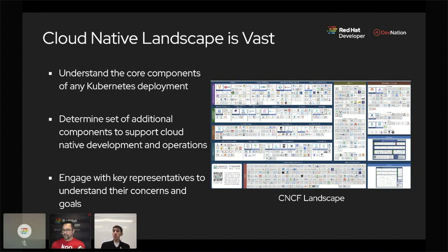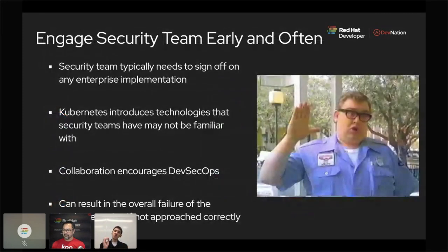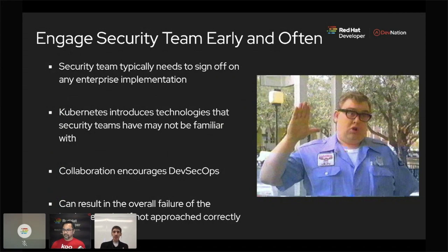What are some of the top concerns? Everything from your containers, the Kubernetes control plane, what access and control you need, what certificates you need to implement, any networking constraints, and storage. The number one thing I will suggest is to engage your security team first and foremost. Otherwise, you may have grand aspirations for this great system, you may even start POC-ing and building it, but when you actually want to implement it, you always have to get approval from your security team.